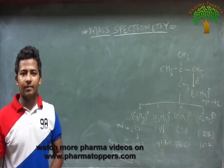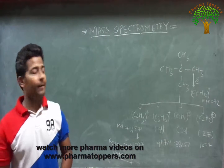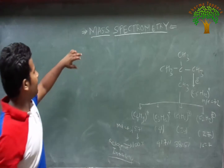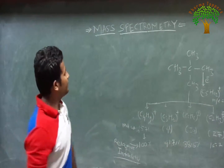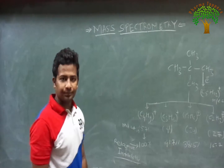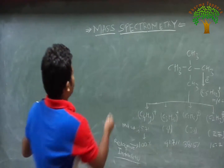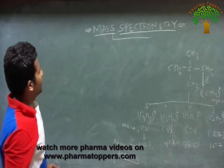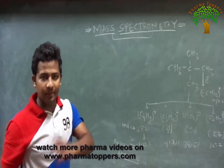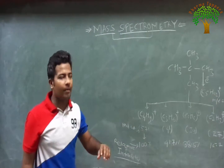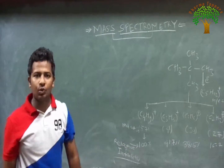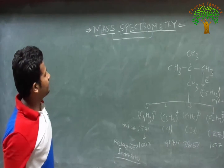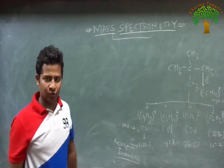Hello friends, welcome to Pharma Dombers. Today we are going to discuss the basic chapters of spectroscopy, that is mass spectrometry, which is a very important topic in analytical chemistry. It is commonly used to determine the structures of unknown compounds. Today we are going to cover half of the part of mass spectrometry.